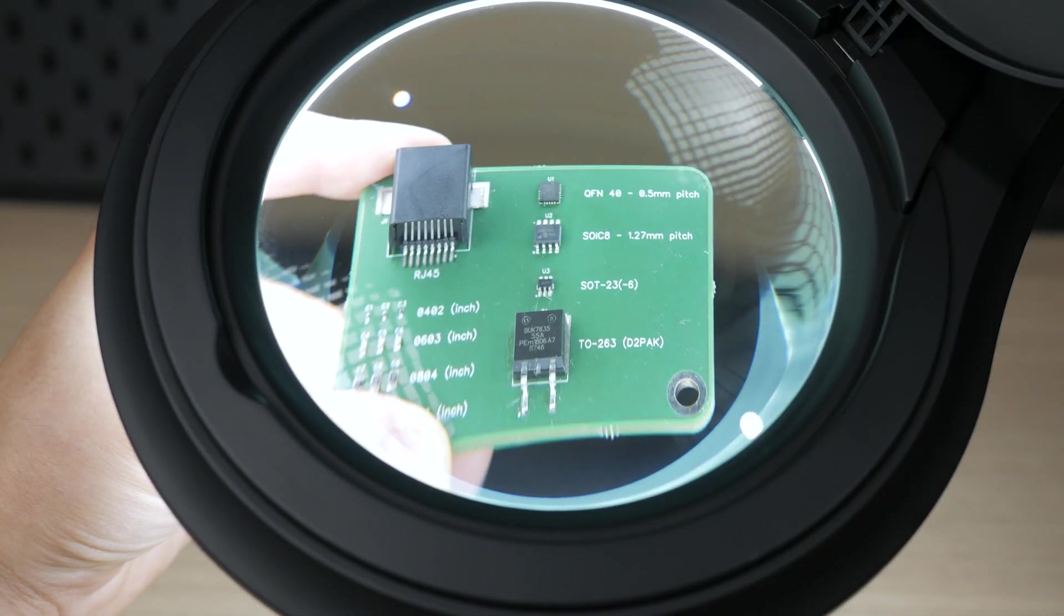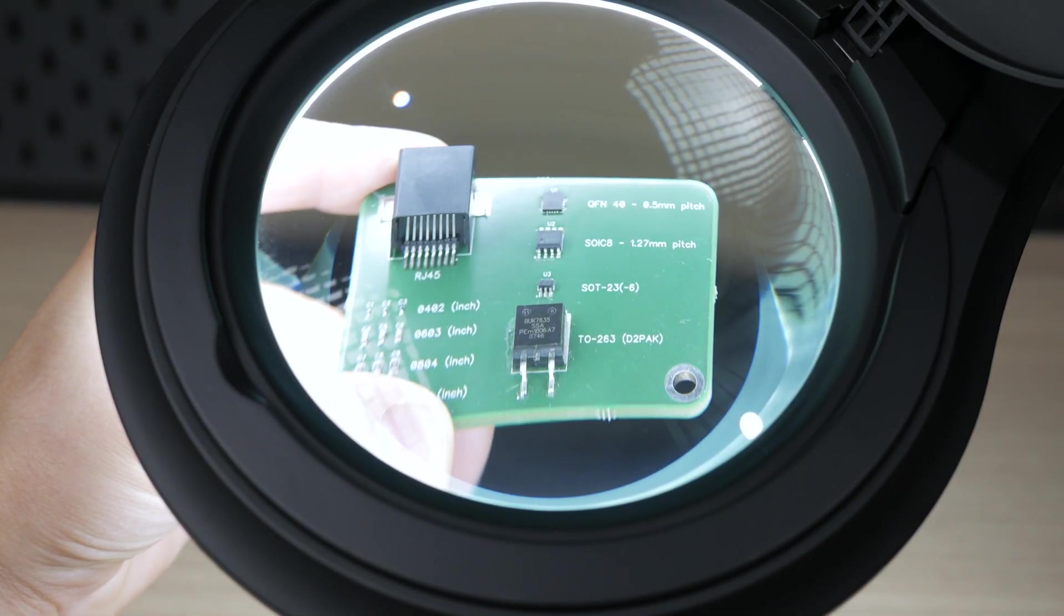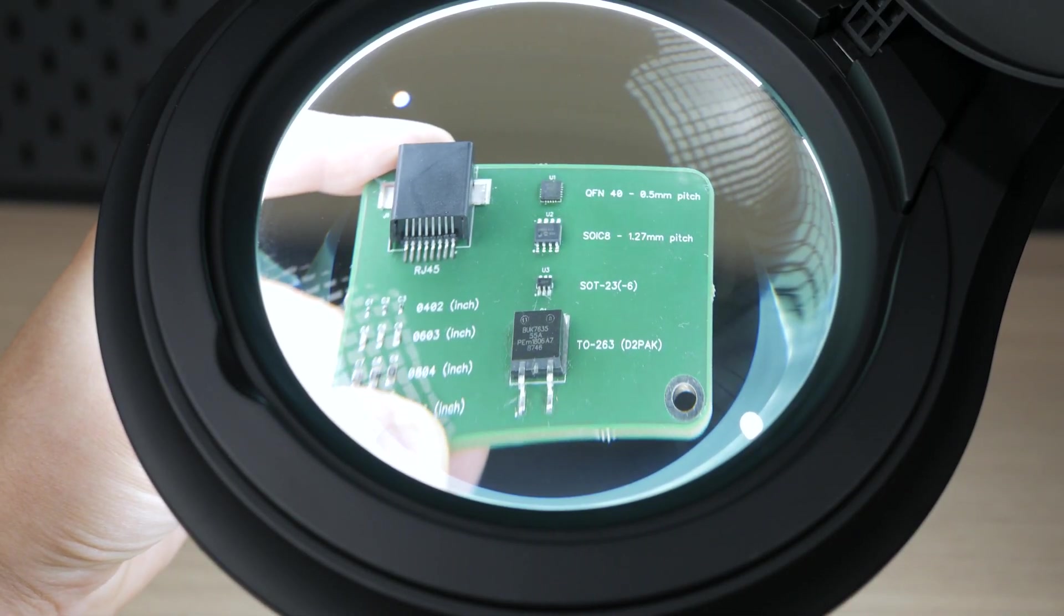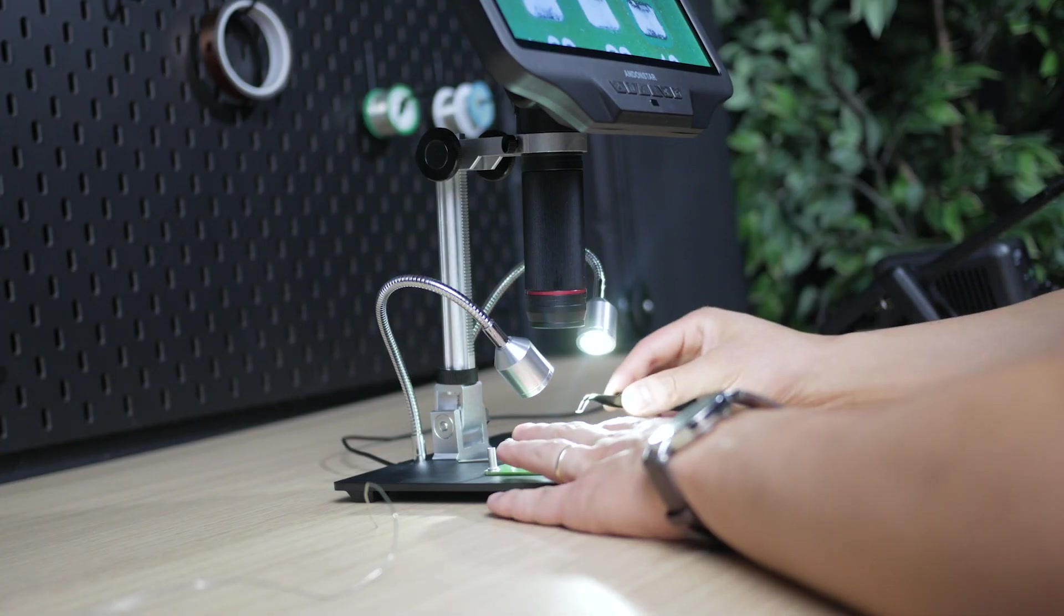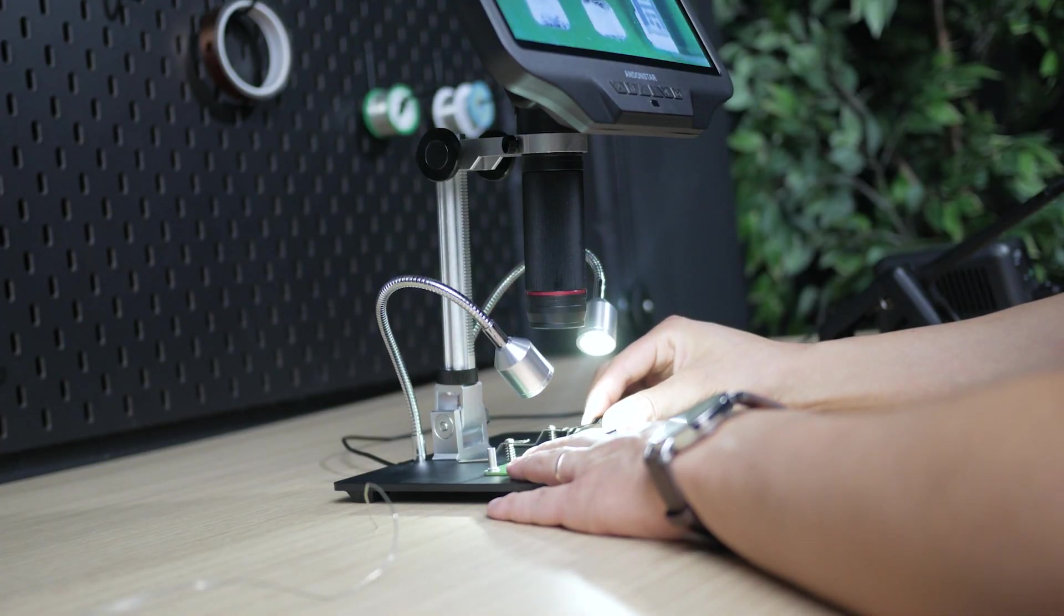The image you see through the magnifier is three-dimensional which makes it easy to solder. The image that can be seen on the screen of this digital microscope is two-dimensional. Not being able to see depth makes moving things around difficult.